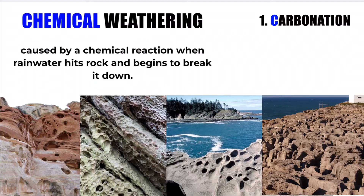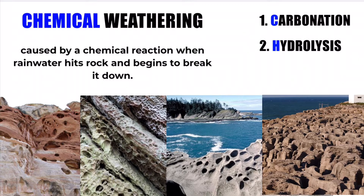The second type of chemical weathering process is known as hydrolysis, and this is where we have acidic rainwater or acid rain breaking down the rock and causing it to rot.